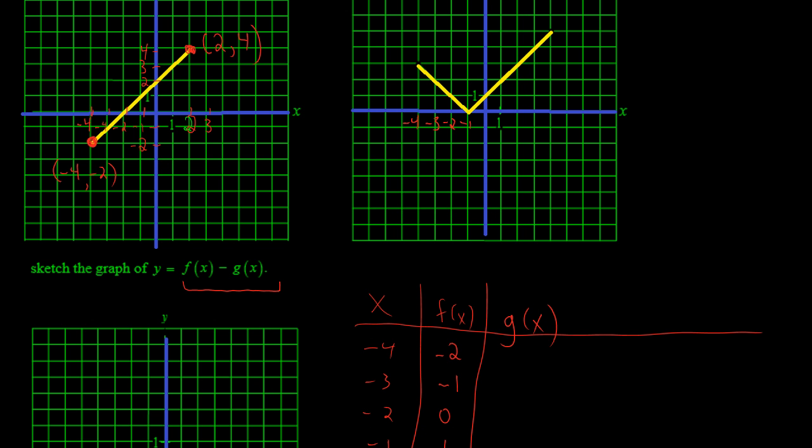And we go 2, 3, negative 1, negative 2, negative 3, which we don't really need. 1, 2, 3, 4.